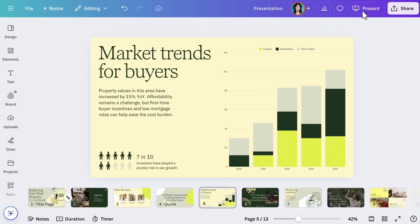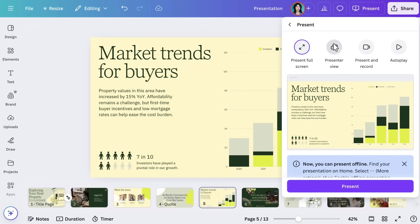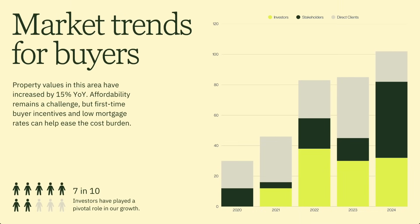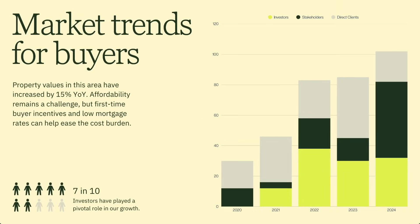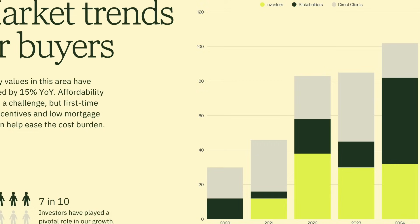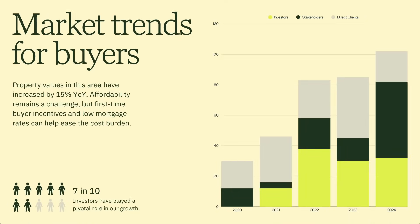Now let's look at Presenter View. Presenter View lets you privately see your notes and time your slides, while keeping your audience focused on the presentation itself — so you can write 'remember to breathe' and no one will know. To access Presenter View, go to Present and select Presenter View. This opens two screens: one that only shows slides for your audience, and one for you with speaker notes, a timer, and a preview of the next slide. It's a great way to stay organized and anticipate what's coming next.